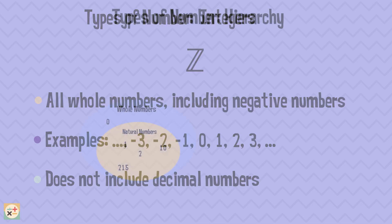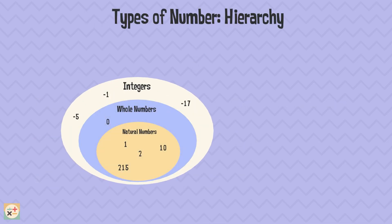Let's place integers onto our diagram. We can see that integers contain everything in the set of whole numbers, including natural numbers. But in addition, integers contain negative numbers.